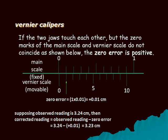Suppose the observed reading is 3.24 centimeters. Then the corrected reading equals observed reading minus zero error with sign, that is 3.24 minus (+0.01), which comes to 3.23 centimeters.